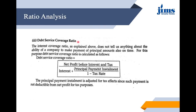Next in this category we have the Debt Service Coverage Ratio. The formula is a bit more complex. The interest coverage ratio we studied does not tell us anything about a company's ability to repay the principal — it only covers interest. This ratio checks whether the principal amount is paid on time. The formula is: PBIT divided by (Interest + Principal Payment Installment divided by (1 minus tax rate)).